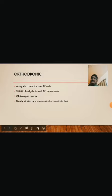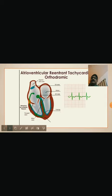Orthodromic conduction is antegrade conduction over the AV node. 70% of arrhythmias involving AV bypass tracks are orthodromic. The QRS complexes are narrow, and it is usually initiated by a premature atrial or ventricular beat. In orthodromic AVRT, the impulse goes from the SA node through the AV node antegrade, and returns retrograde through the accessory tract.